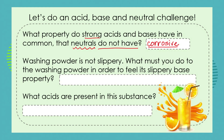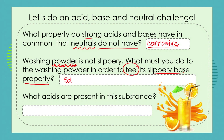Let's move on to our next challenge. Washing powder — and I'm talking about the powder, not liquid washing or detergent solution. Washing powder is not slippery; it's a solid and it feels grainy to the touch. What must you do to the washing powder in order to feel its slippery base property? You need to create a solution — add the washing powder to water and then you will have a solution. Do you remember what we call a basic solution? A basic solution is an alkaline solution, and then you can feel its slippery base-like property.